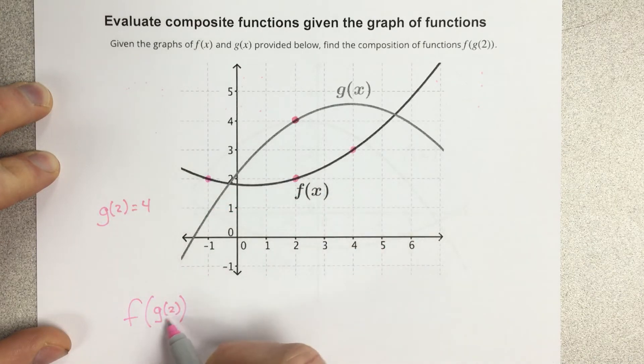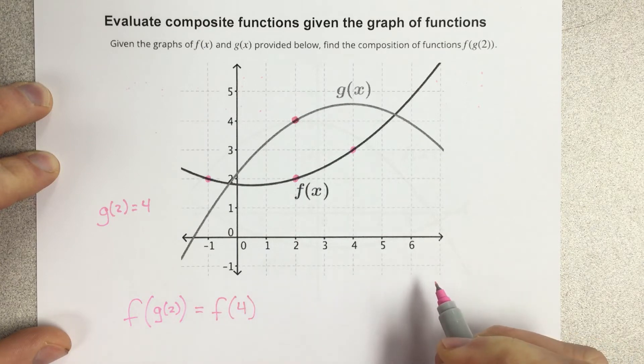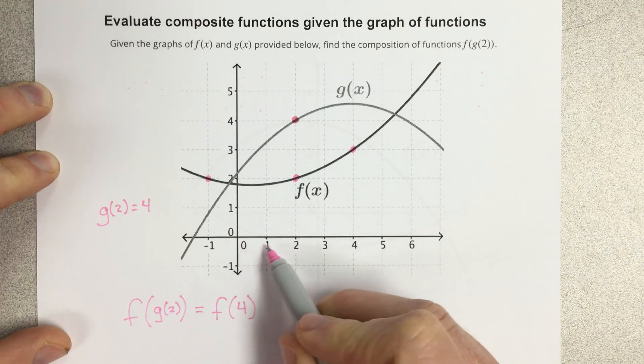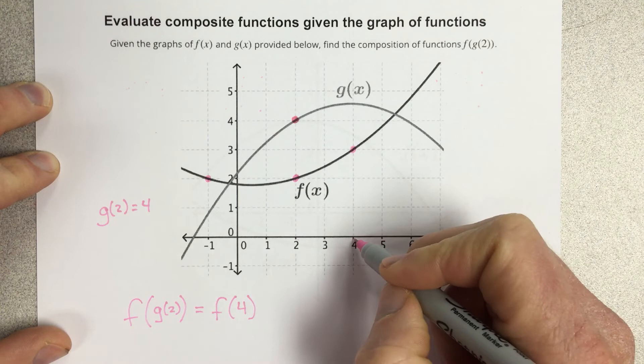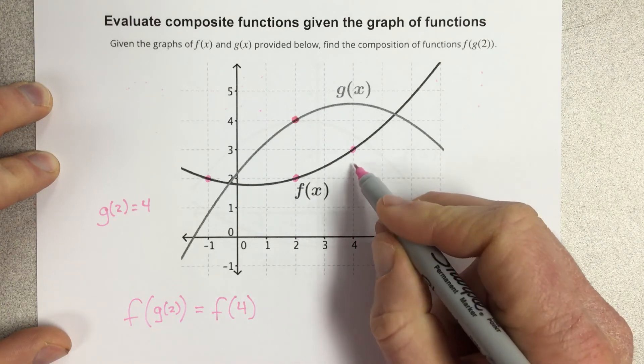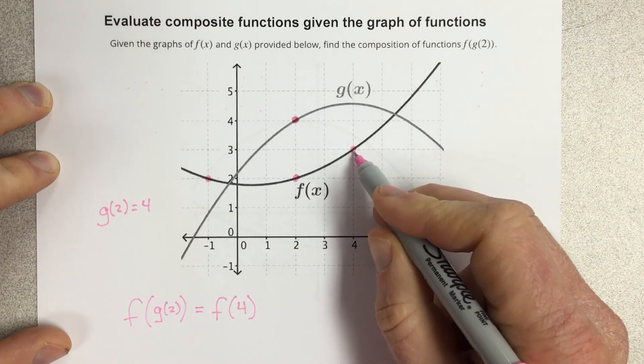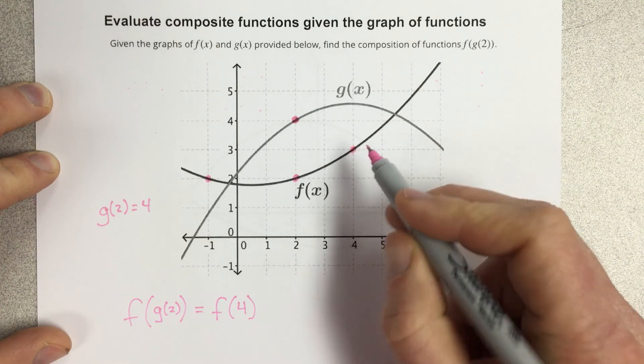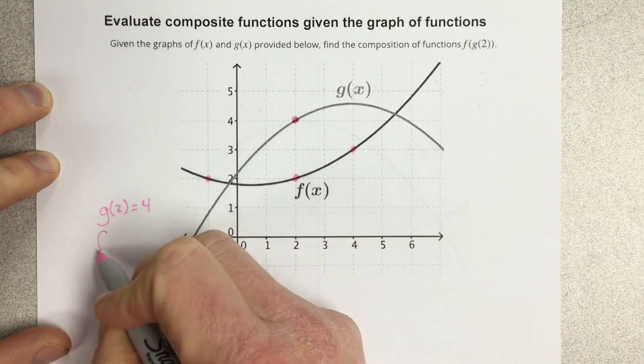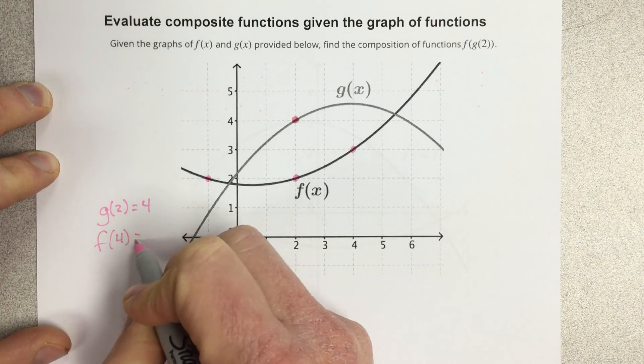So I'm going to replace g of 2 with 4. So now I'm looking for f of 4. I go to the x value of 4, which is here, and then I move myself up to where the f function is. And that's an output of 3 where it touches. So I'm going to say that f of 4 is 3.